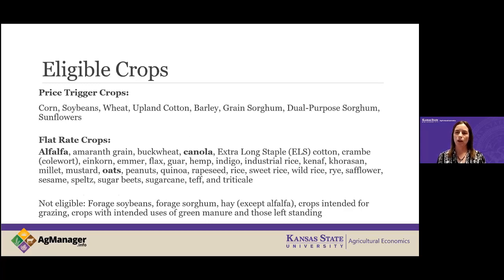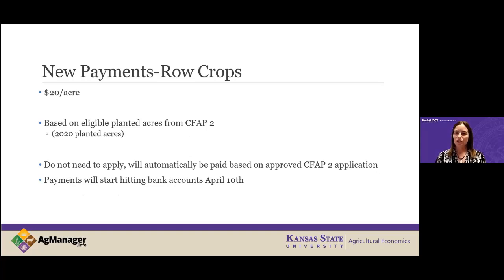As you heard, $20 an acre is what you're going to get paid, based on CFAP 2. Importantly, you don't need to apply for this — a top-up payment is just paid on top of an already approved CFAP 2 application. You're going to receive these quite quickly; by April 10th you'll start seeing these hitting your bank accounts.